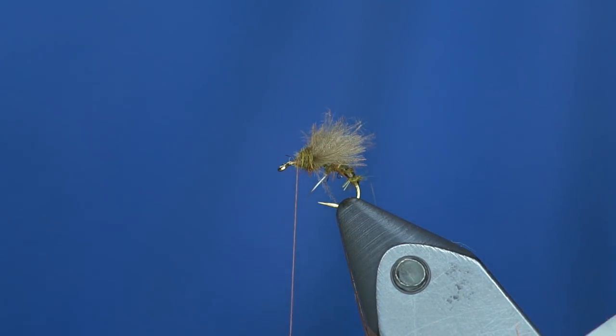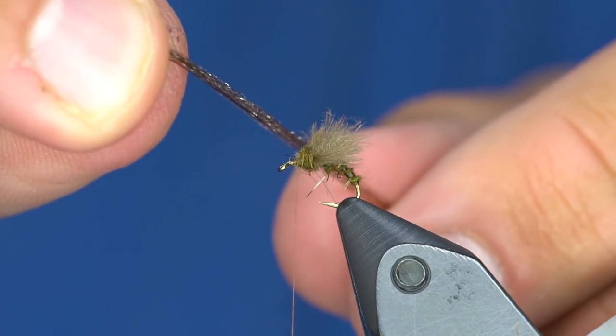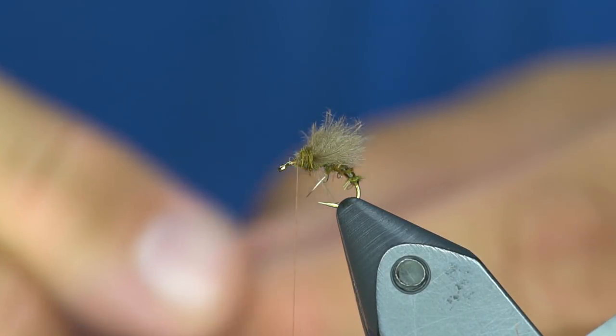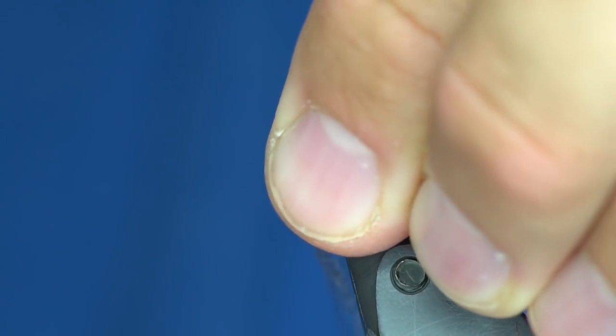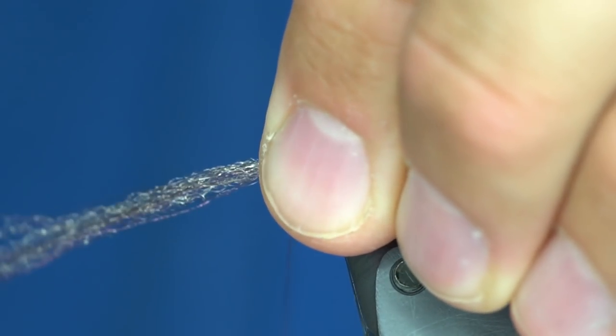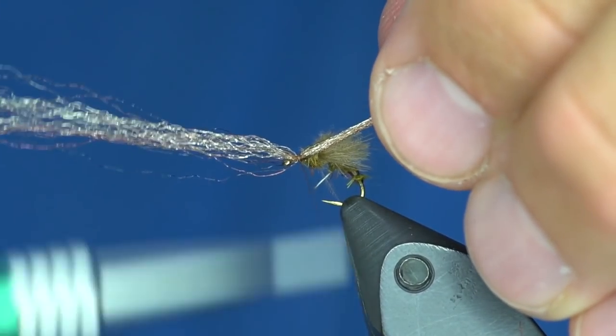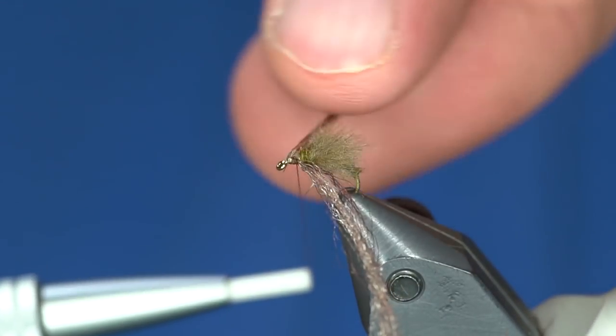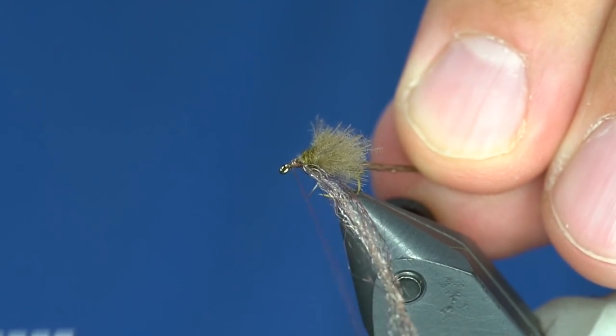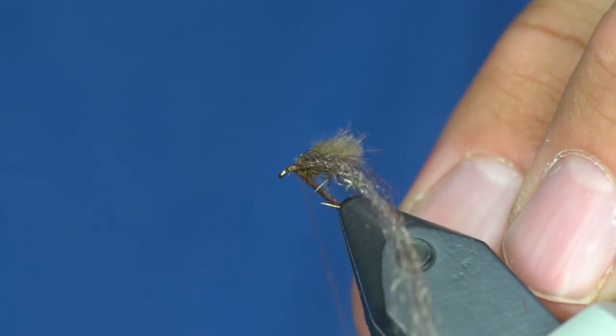Now what I'm going to do is I'm going to take some March brown colored EP trigger point fibers. They're pretty buoyant. I'm going to tie one side, or I'm going to tie it onto one side of the fly and then just loop it over to the other side. Get it to where I can see it.